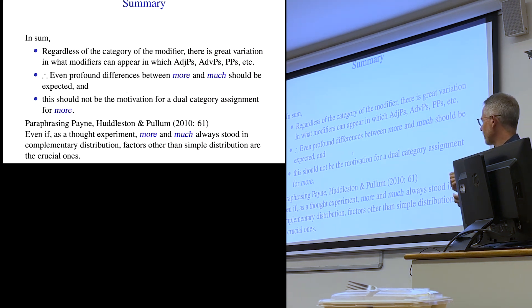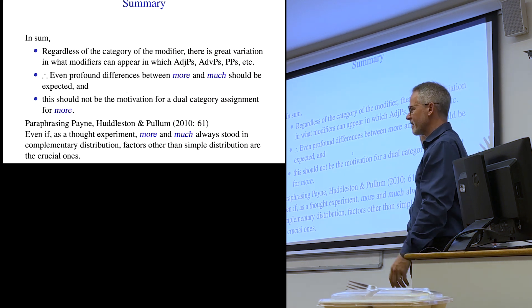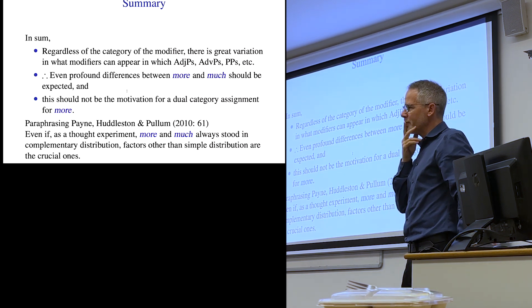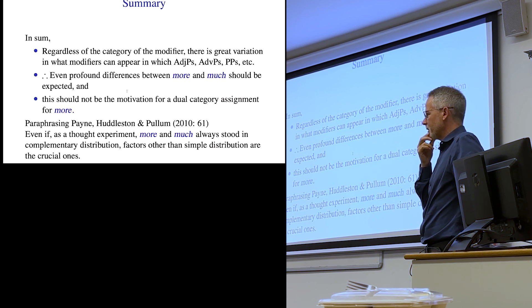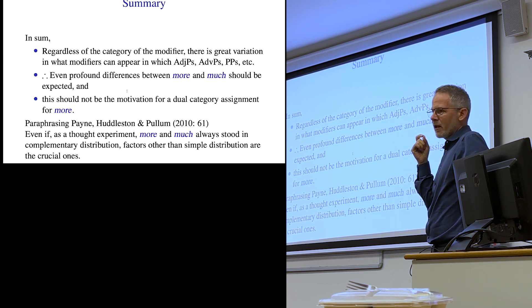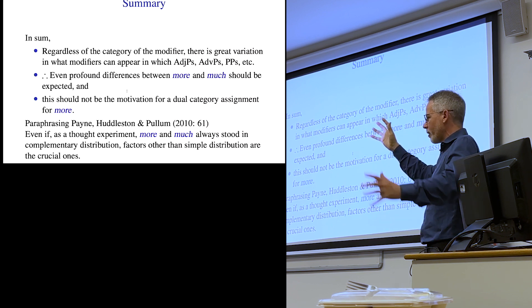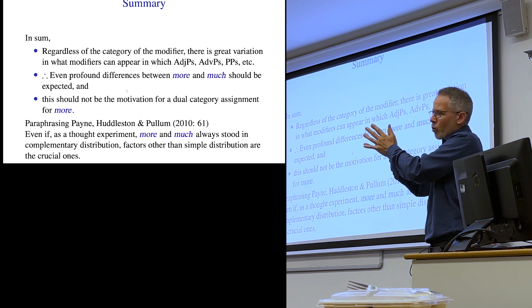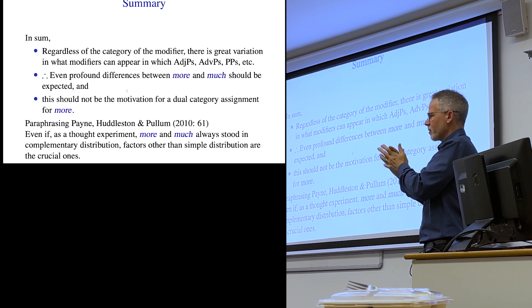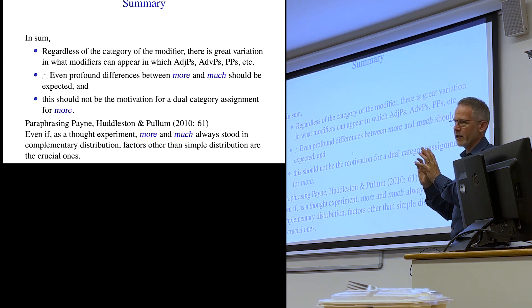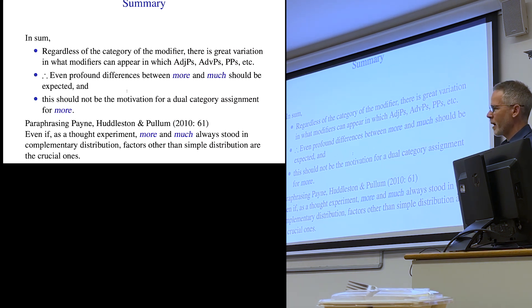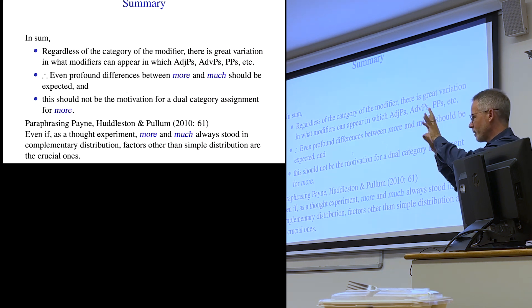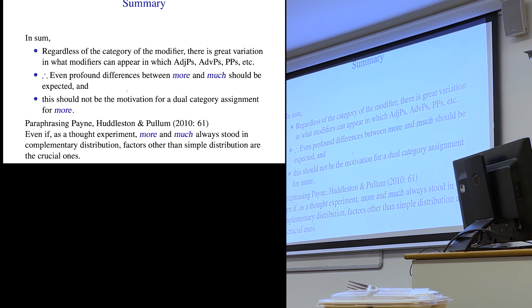We see the same thing in prepositional phrases. Slightly different, but again, you know, I won't go through all of them, but you can see that there's sort of a, it's hard to pick out a pattern and say, well, these group together, and so they should be adverbs, and these group together, and so they should be determinatives. There's no obvious pattern there. So another summary here, but I'm only at 16 minutes, so I'll go on. But just regardless of the category of the modifier, there's great variation in what modifiers can appear with each adverb, adjective phrases, and adverb phrases, and prepositional phrases. So even profound differences between more and much should be expected. Even if they're the same category, we should expect that, and it shouldn't be the motivation. And I think that, unless I've misunderstood them, Payne, Huddleston, and Cologne in 2010 essentially make this same kind of claim. They were arguing against Hans Giger, and he was saying that adjectives and adverbs are just the same. It's one category, and he was doing this on distributional grounds, and they were saying no. I think it's a similar kind of argument.